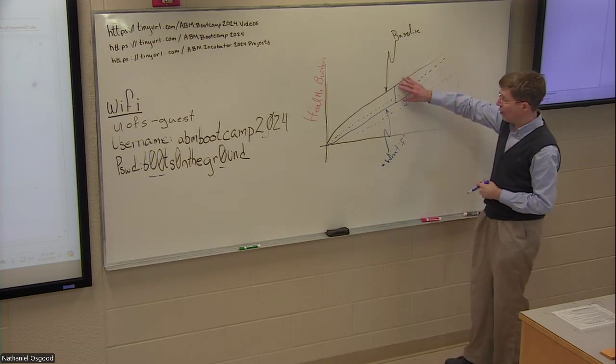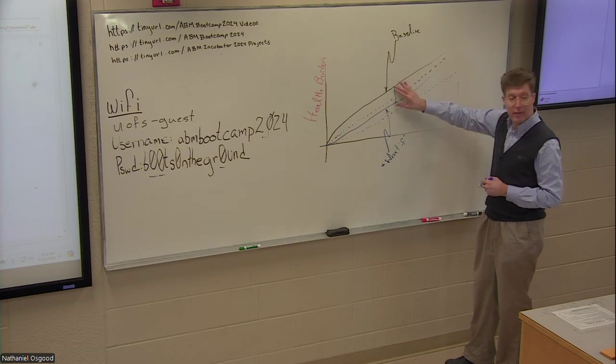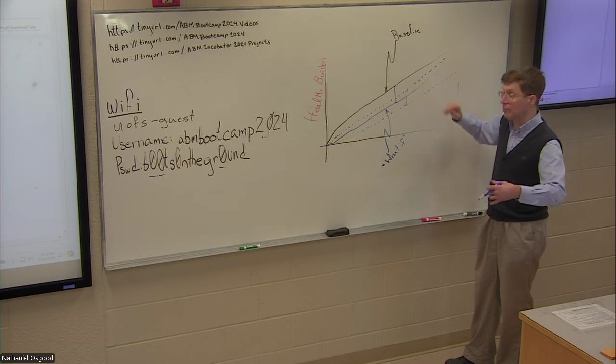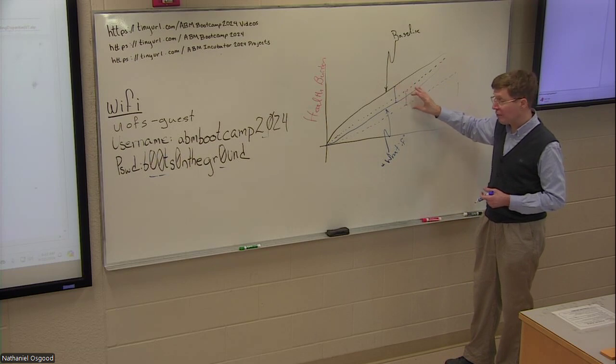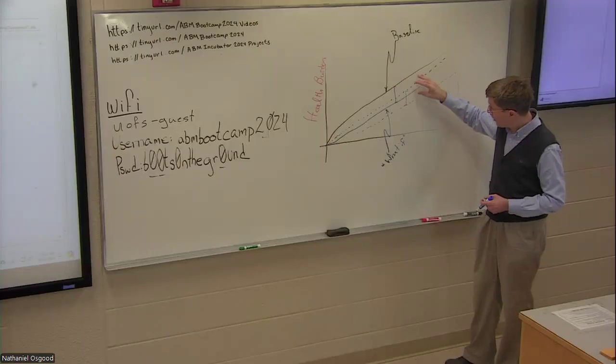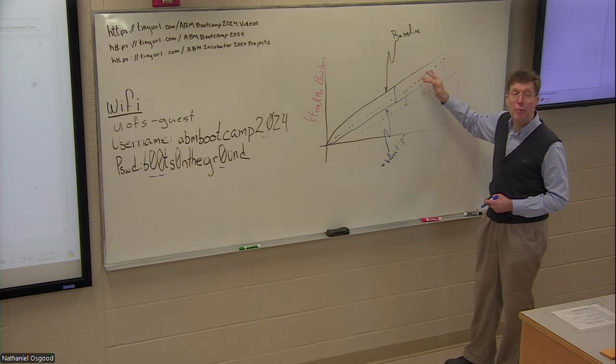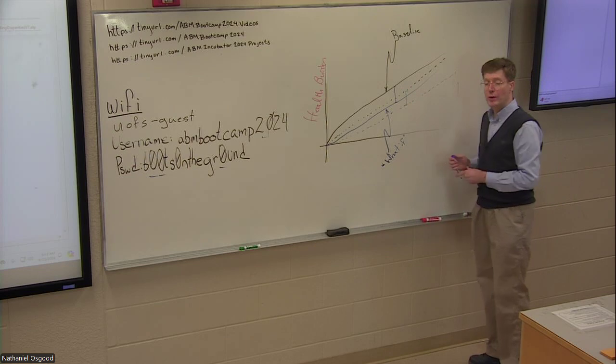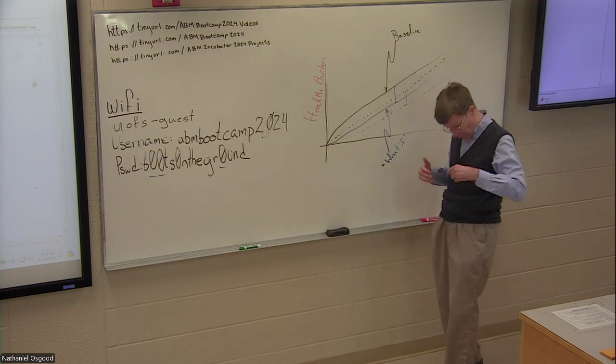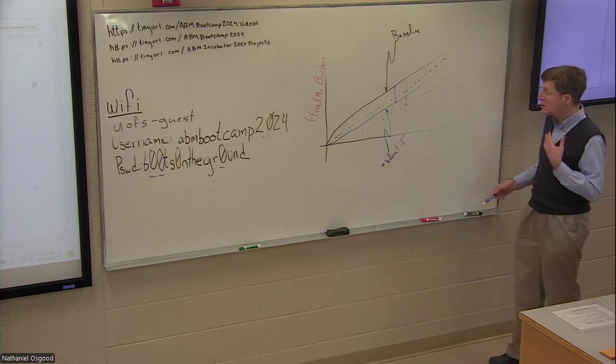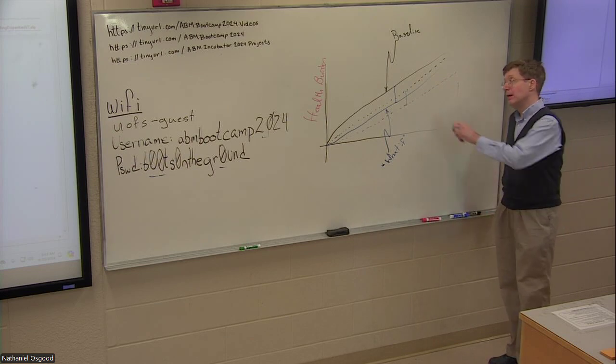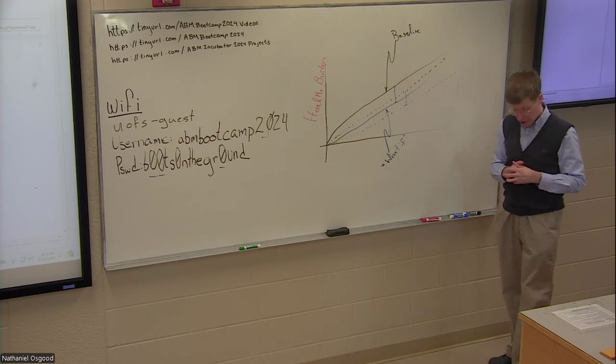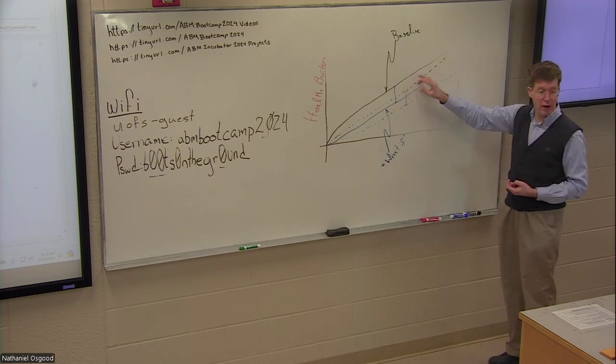The difference between those might be fairly well conserved between what our model does now versus our model if we included those five factors. That difference between them, between the two scenarios, the baseline and alternative now, or the baseline alternative if we spent the extra time to incorporate these five extra factors, those might be a lot closer to each other in those differences than the baseline would be to what would be produced if we incorporated those factors or the alternative compared to what it would be if we incorporated those five factors. So sometimes what you get in terms of critique of model structure that you've left out X, Y, Z, A, B, C bites less tightly, less keenly if you are considering differences between two scenarios, between baseline and alternative, for example.